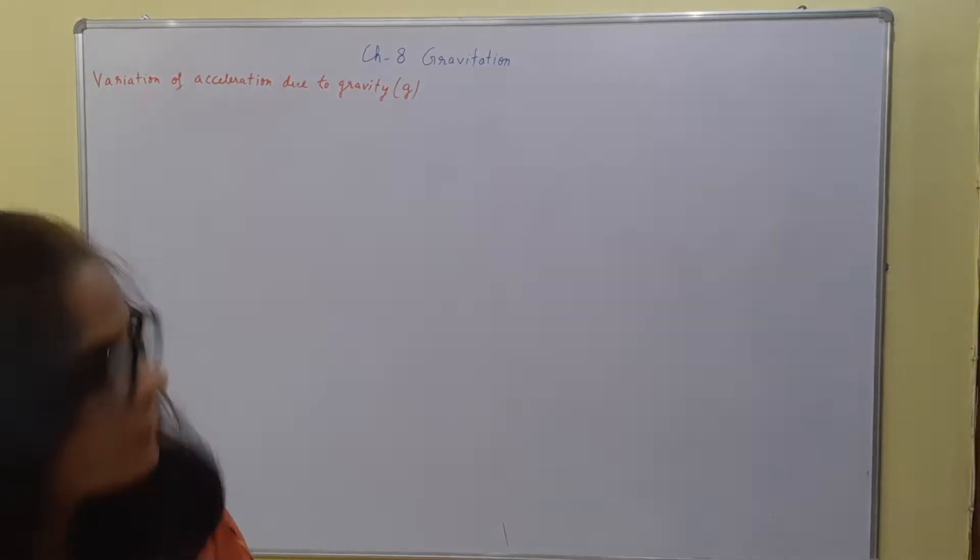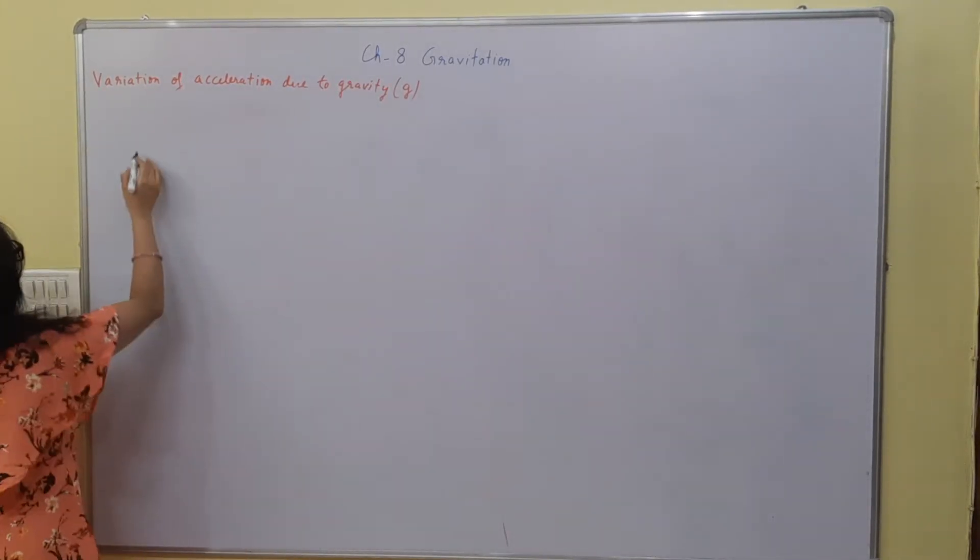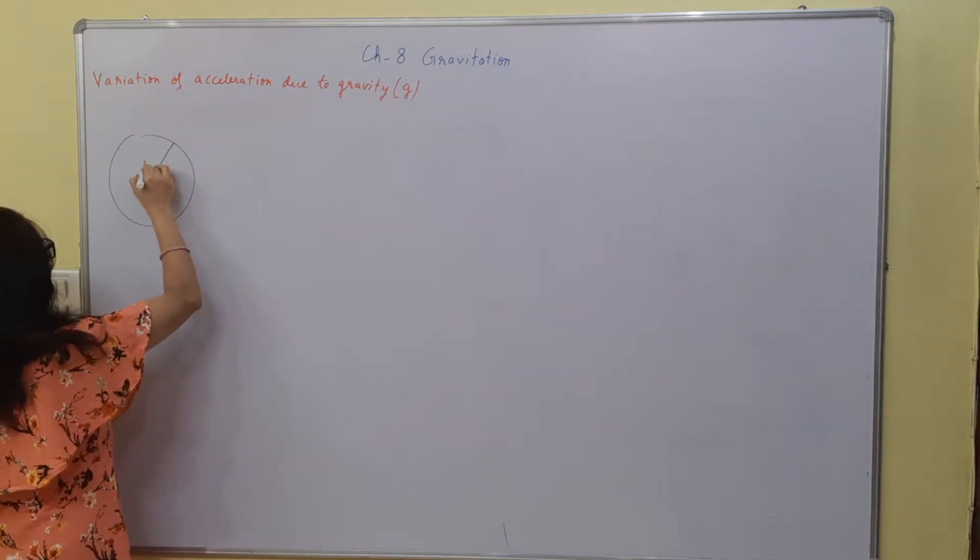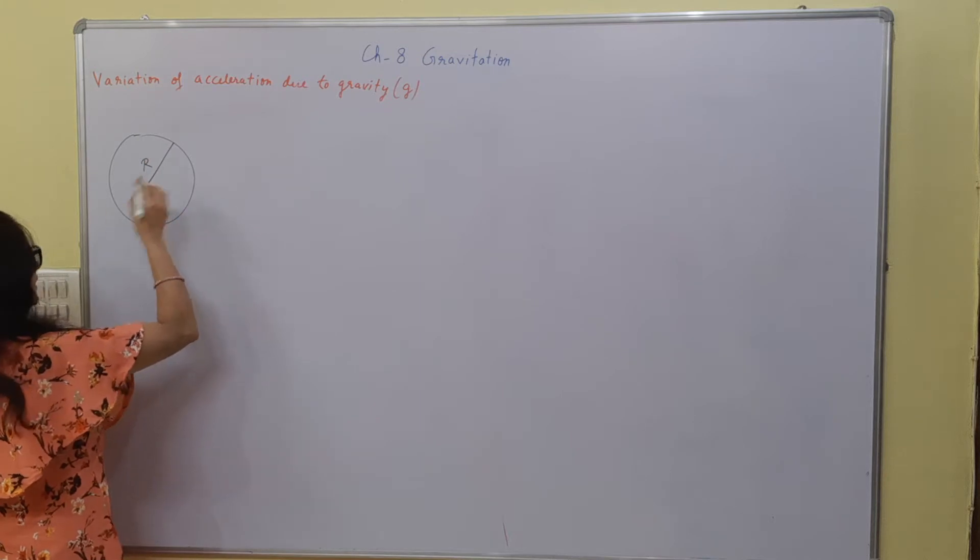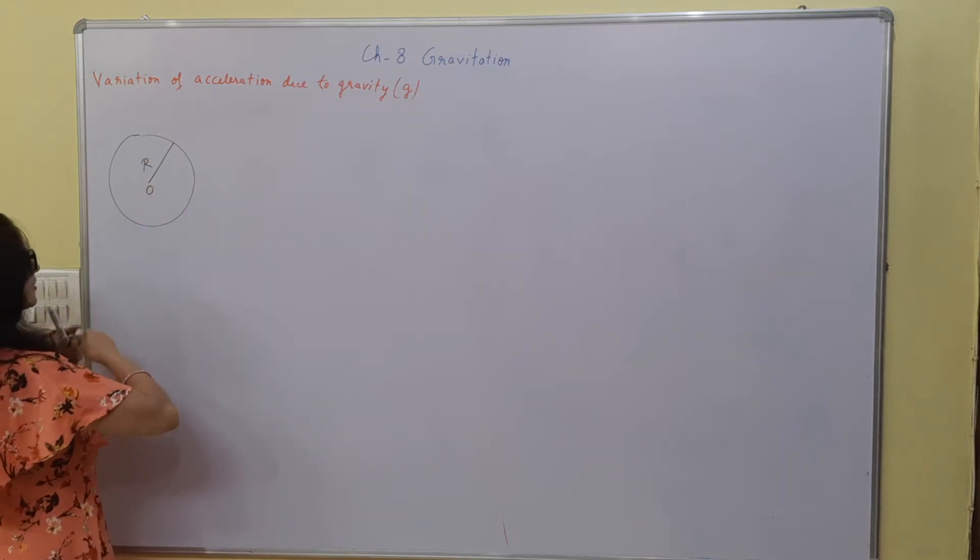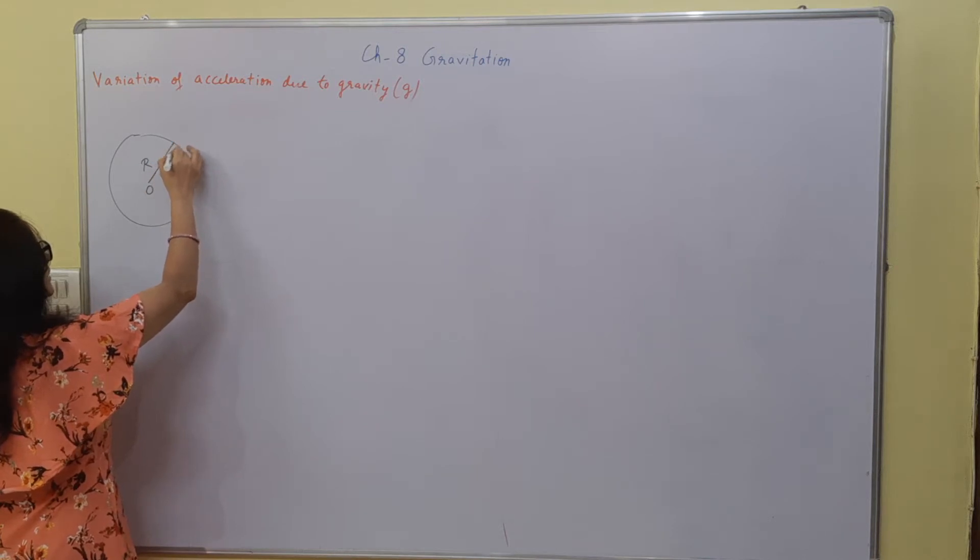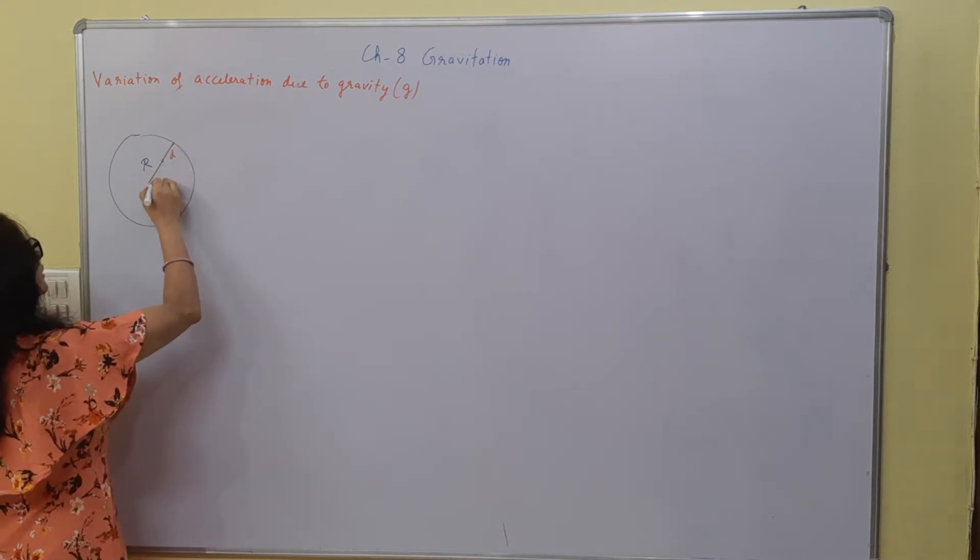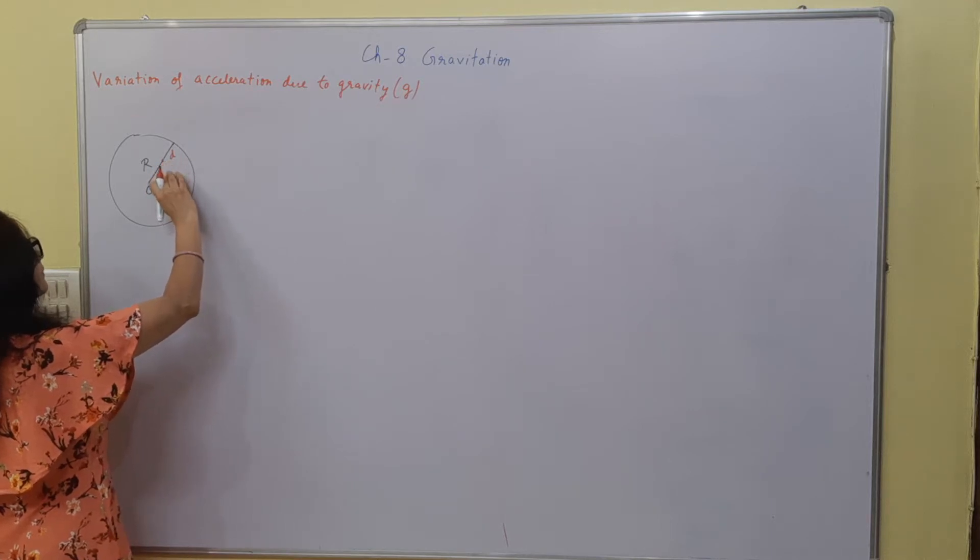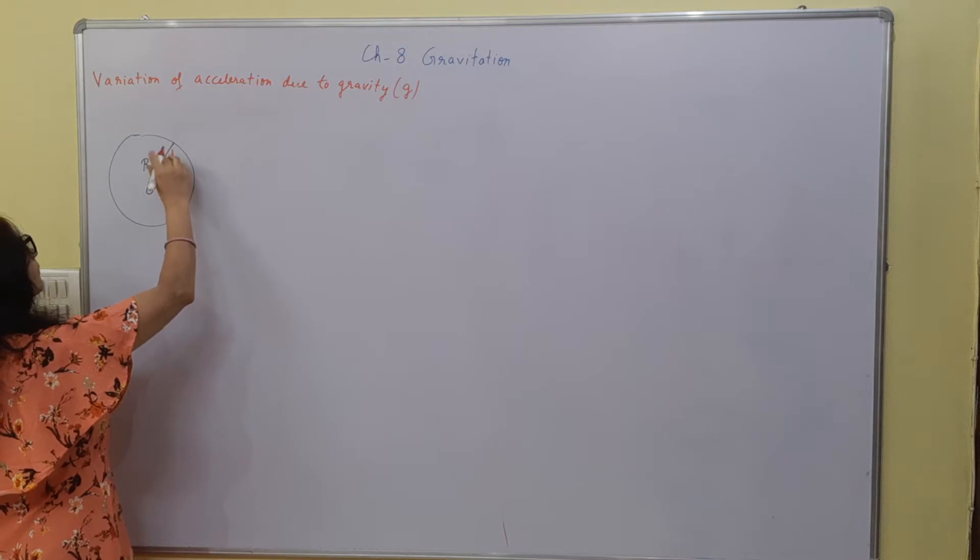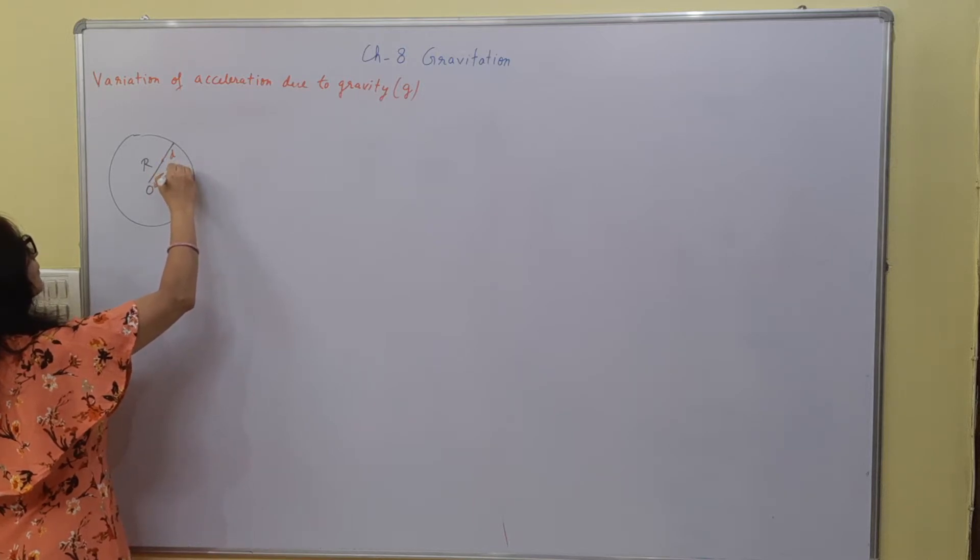For that we are considering this earth having radius r and from center if we are considering the distance. If we take this as depth point, this will be r minus d.